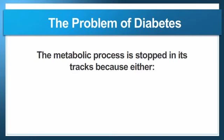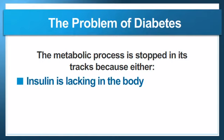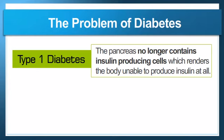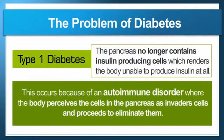The metabolic process is stopped in its tracks because either insulin is lacking in the body or the body is unable to use the insulin. For type 1 diabetics, the pancreas no longer contains the insulin-producing cells, rendering the body unable to produce insulin at all. This occurs because of an autoimmune disorder where the body perceives the cells in the pancreas as invader cells and proceeds to eliminate them.